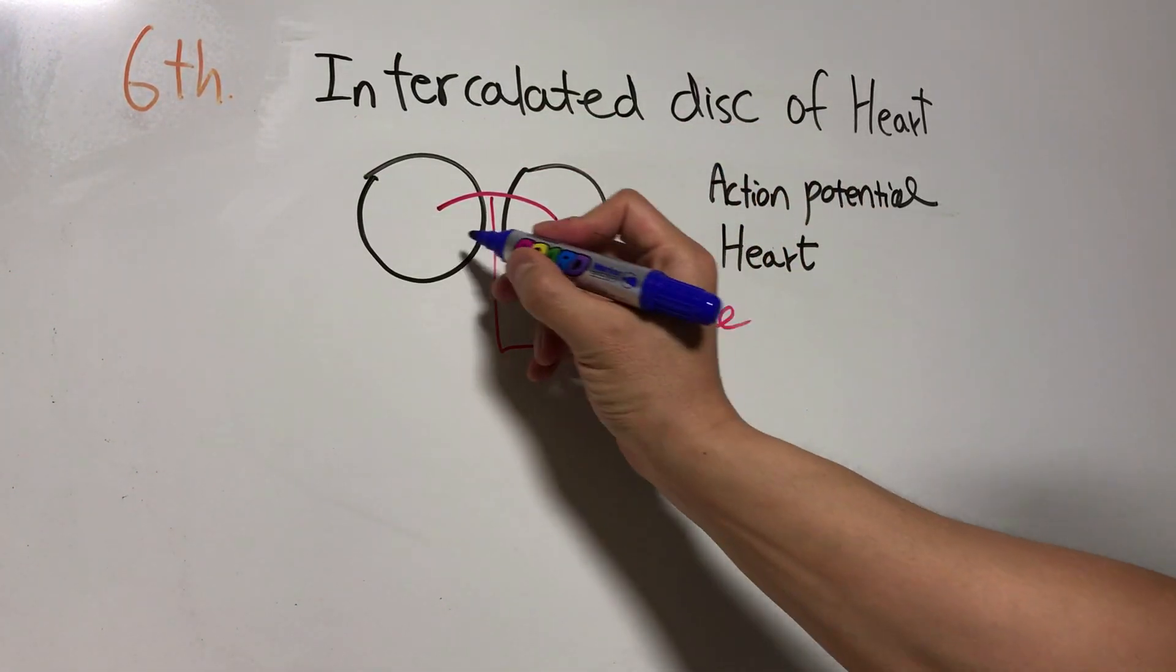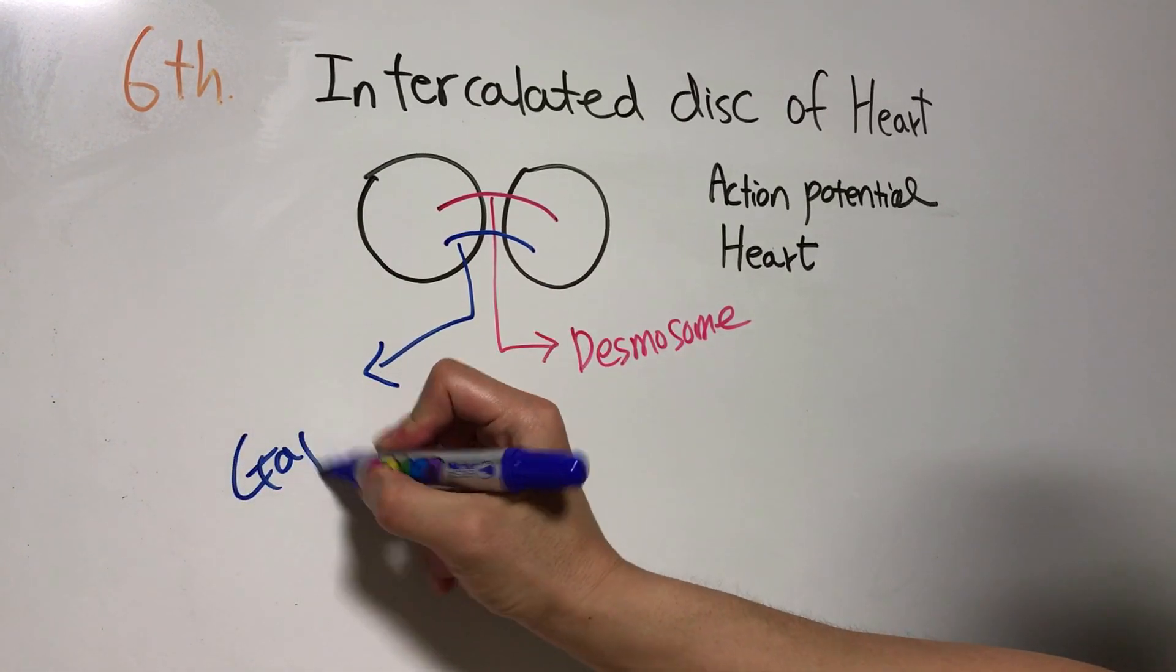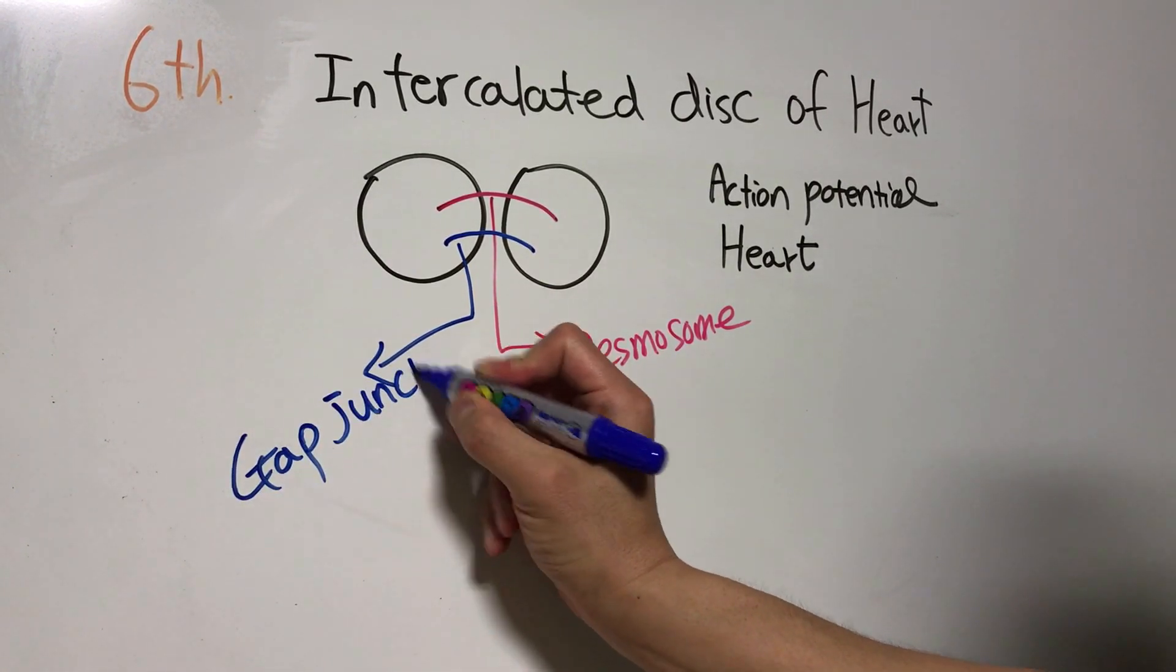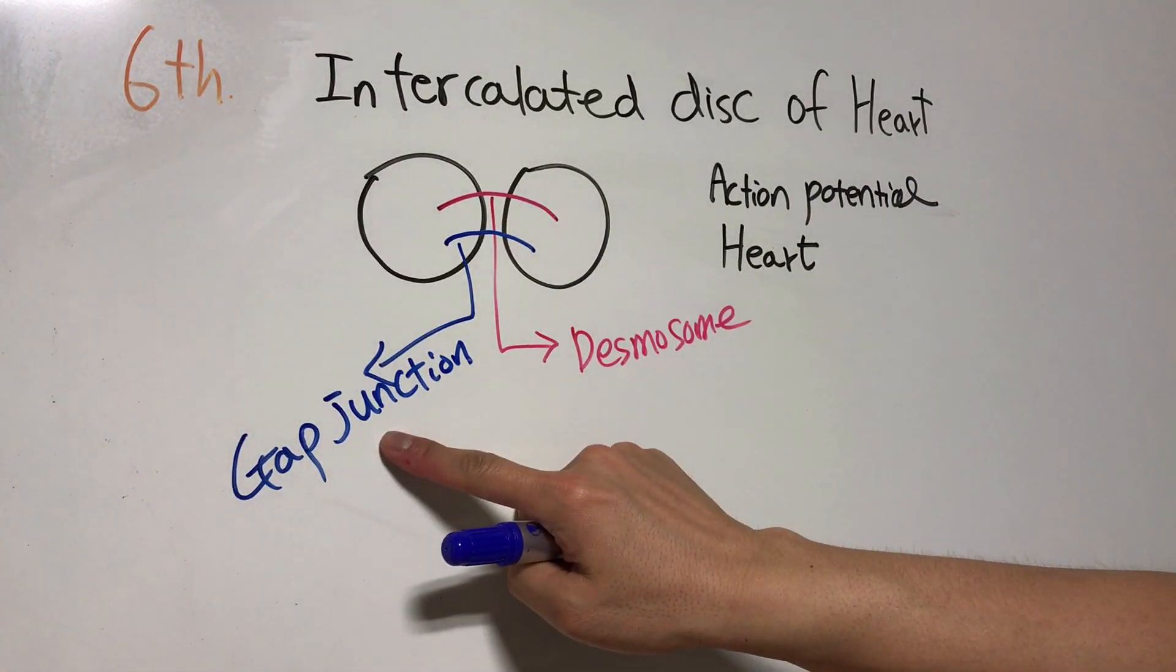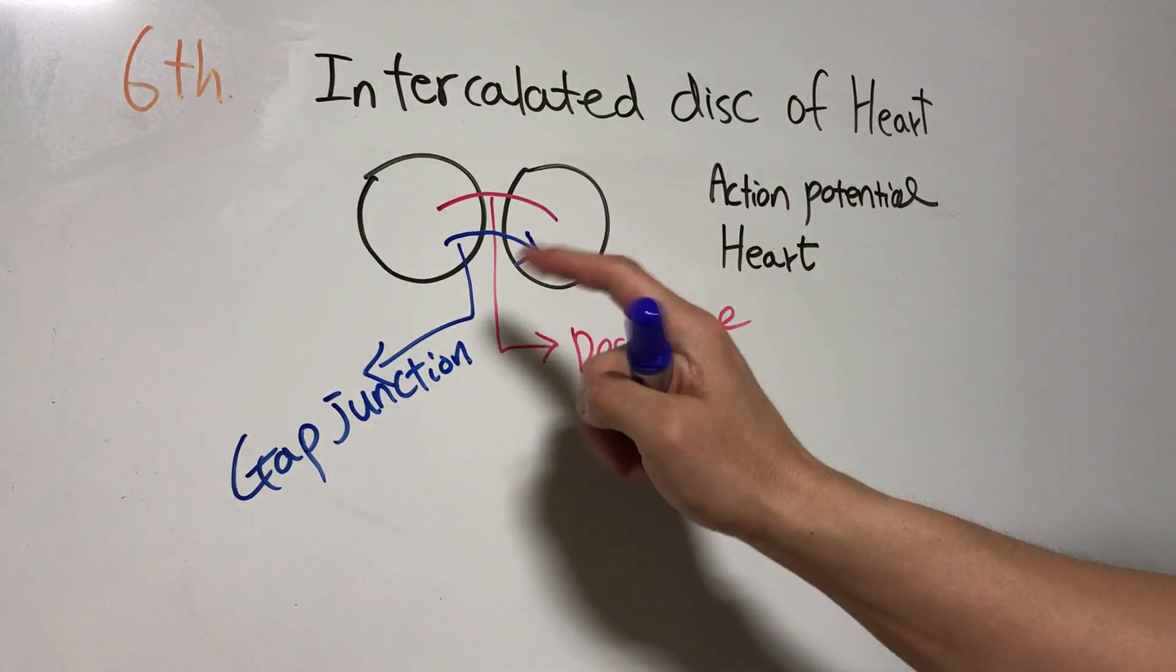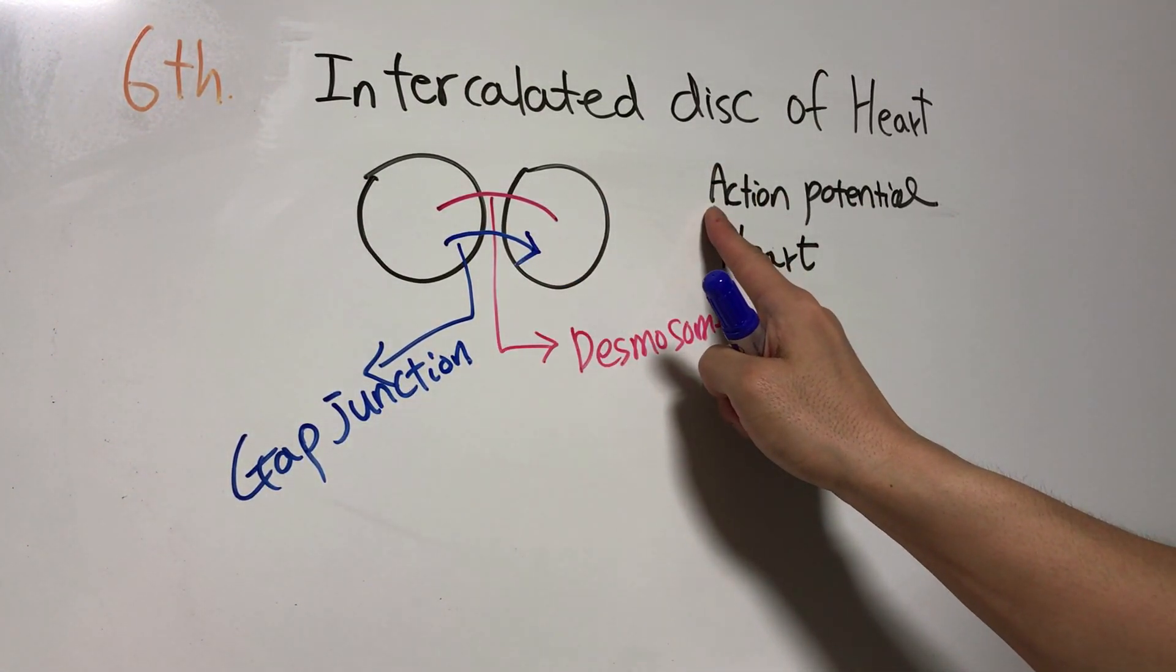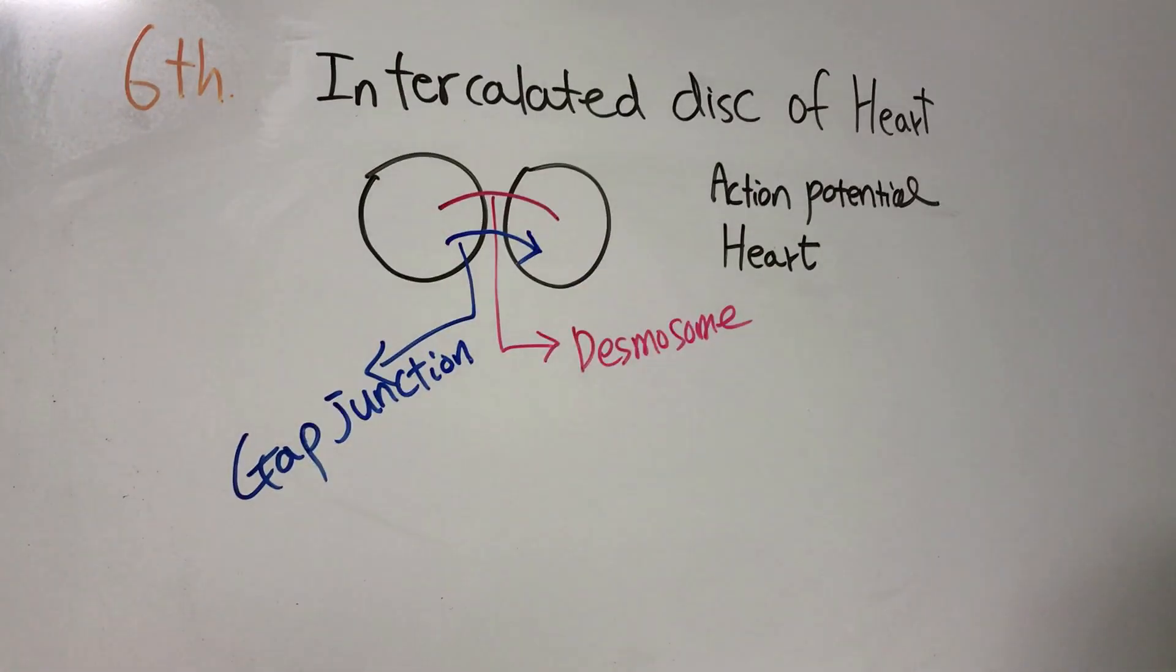The intercalated disc also has gap junctions. The gap junction is a pathway that conducts action potential between myocardial cells—a very important structure.